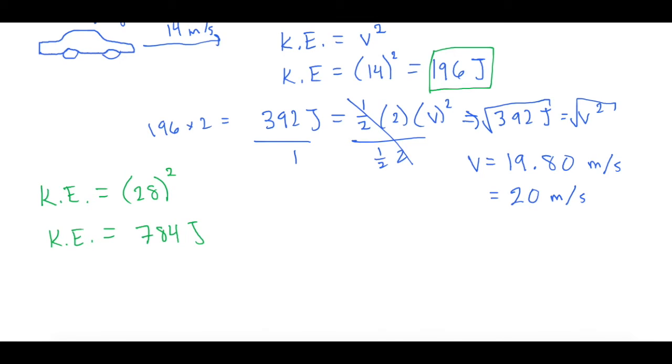Okay. So now what they do, they even tell you in mastering physics, if we take kinetic energy of 2 and divide it by kinetic energy of 1, that'll tell us by what factor it was increased. So if we take 784 joules divided by 196 joules, that gives us 784 divided by 196. The kinetic energy is increased by a factor of 4.